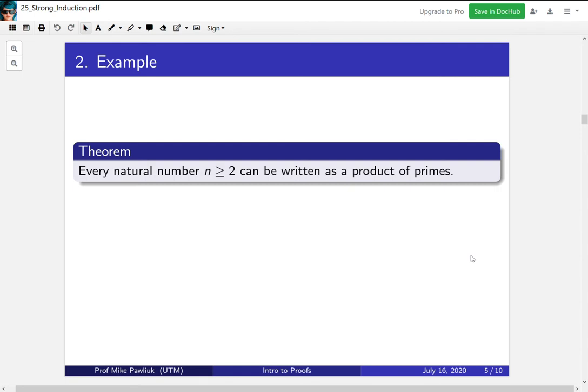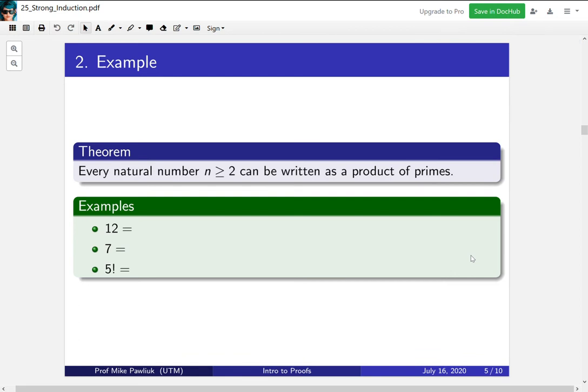The first example we'll look at is this theorem. Every natural number n greater or equal to 2 can be written as a product of primes. So here are some examples. Take a moment to write 12, 7, and 5 factorial as a product of primes. I'll give you a moment to do that right now.